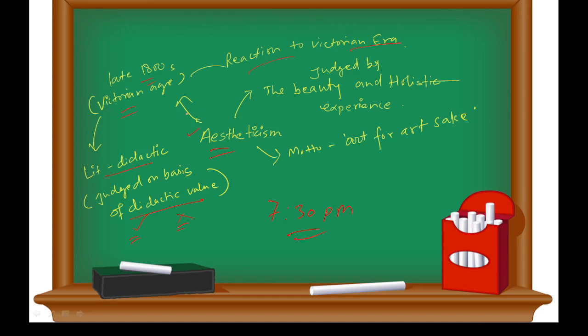I try to simplify every topic so that you can understand better. Now, what did aesthetic people do? Aestheticism was about the beauty and the holistic experience. Aestheticism judged work by the beauty and holistic experience. Their motto was 'art for art's sake' - you must have heard this motto.